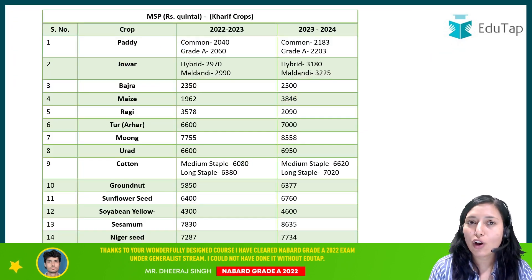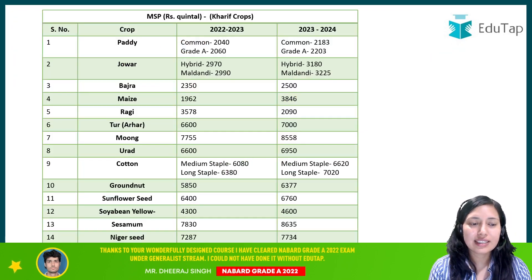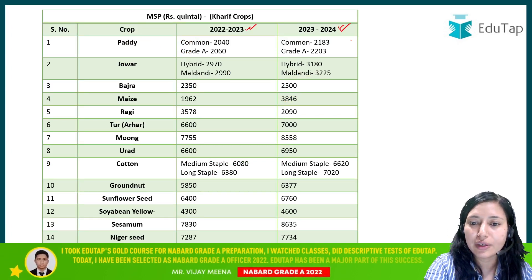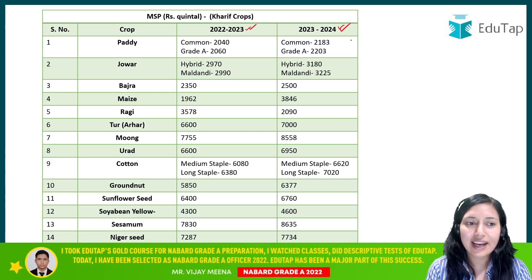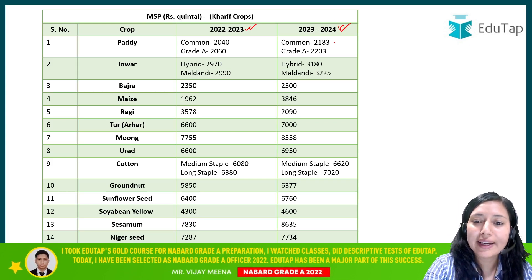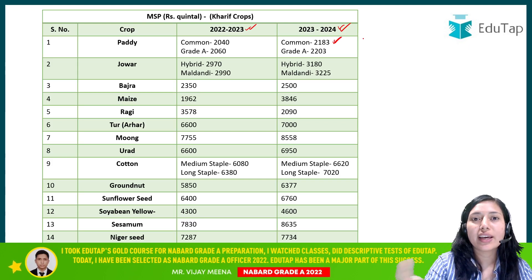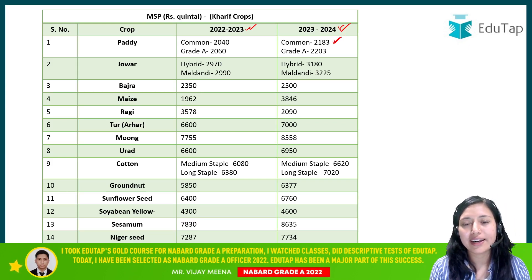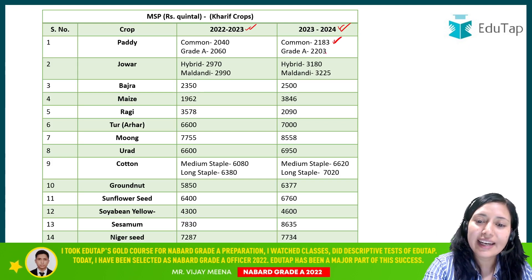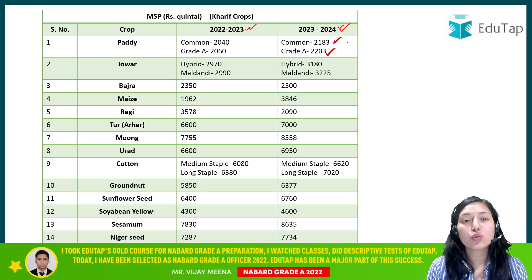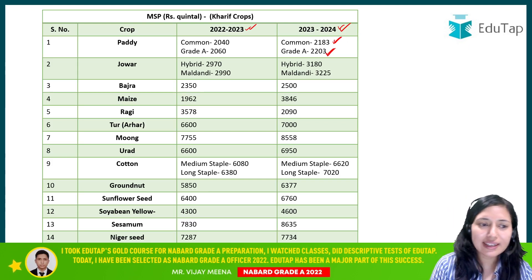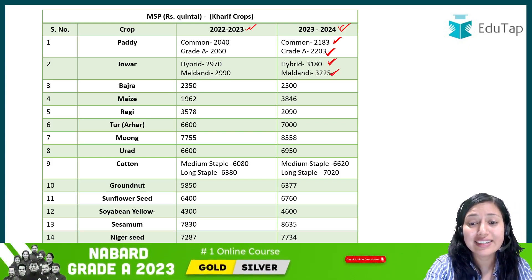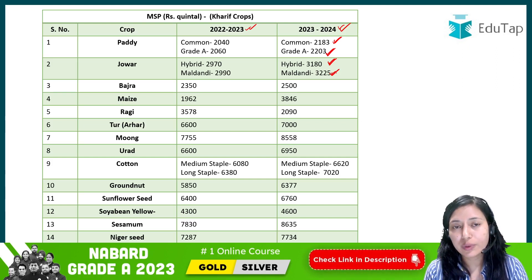Now let's look at the current MSP. For Kharif season crops 2022-23 and 2023-24, the MSP for common paddy is ₹2,183 per quintal, and for Grade A paddy it is ₹2,203. For hybrid jowar it is ₹3,180, while for maldandi jowar it is ₹3,225. Bajra's MSP is ₹2,500 per quintal.